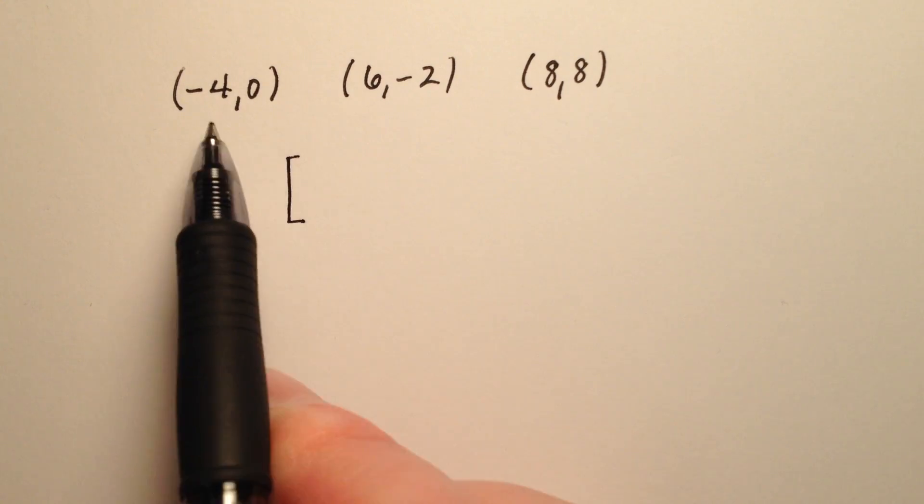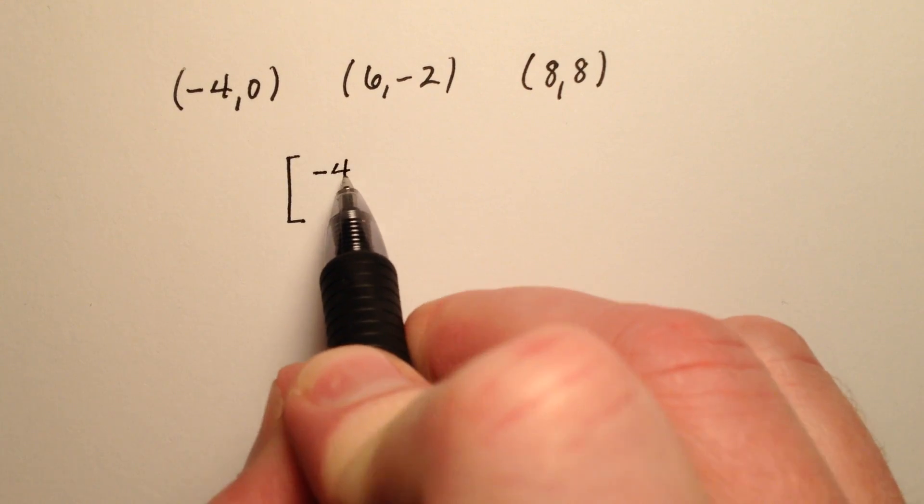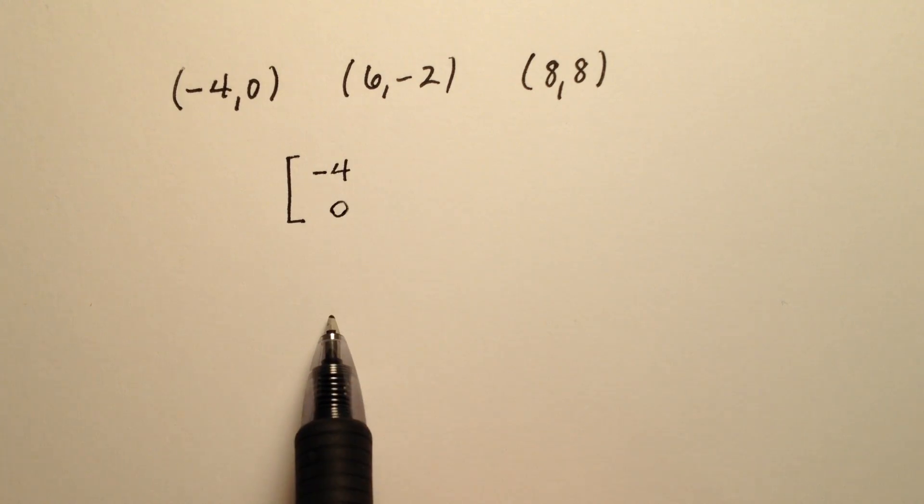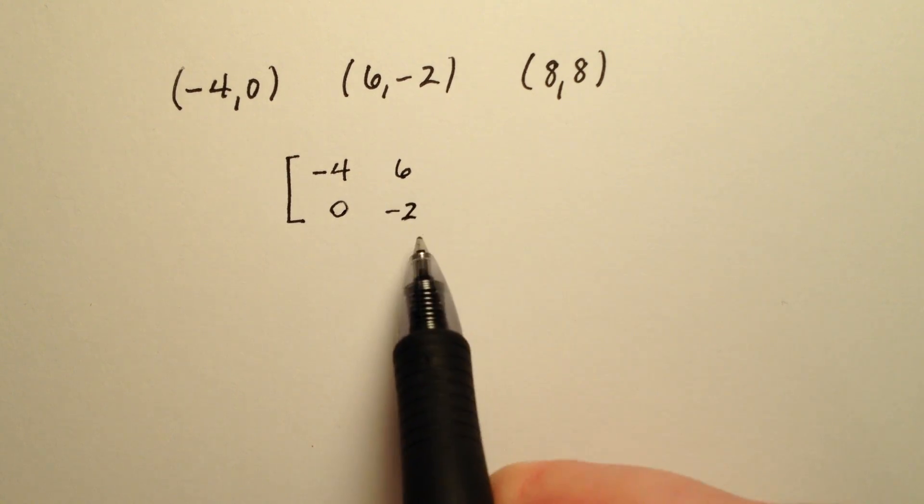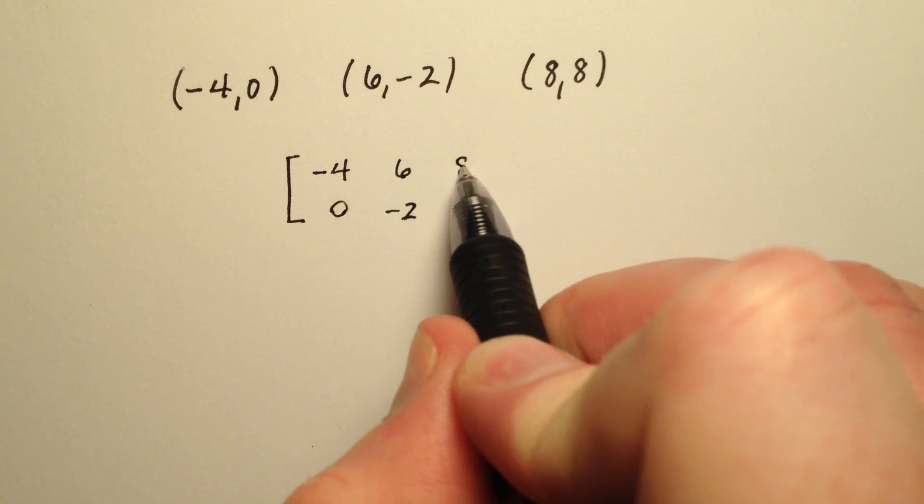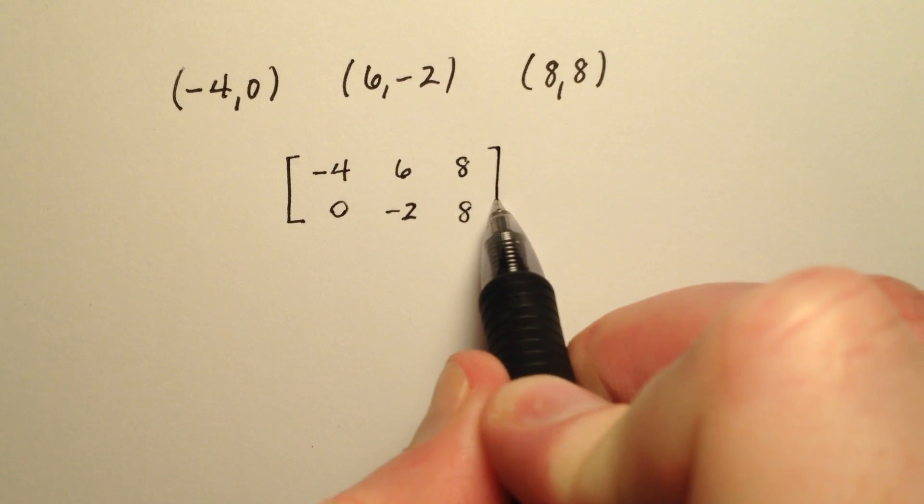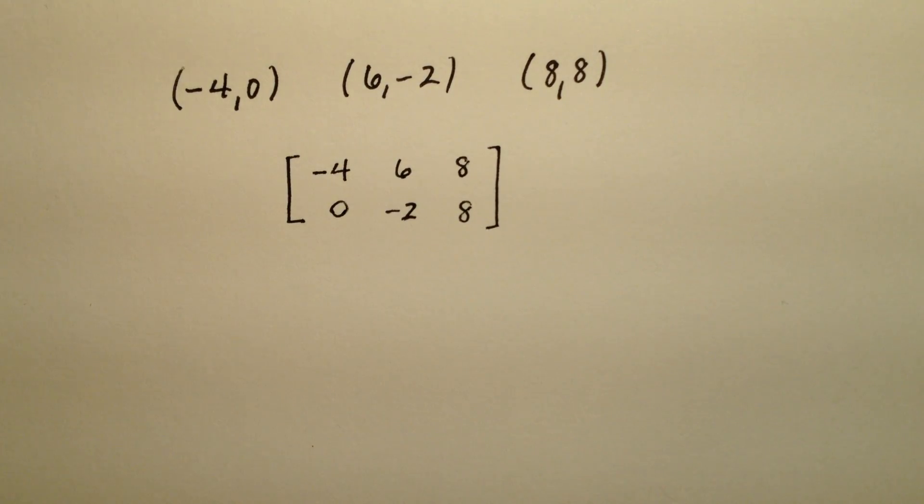As I begin here, my first ordered pair is negative 4, 0. I'm going to work right down the columns, so 6, negative 2 is the next ordered pair, and the final one is the ordered pair 8, 8. So that will be the vertex matrix for the given triangle.